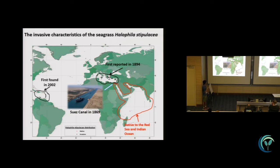Right now it has invaded all the way up to Italy. And surprisingly in 2002, people found the Halophila also in the Caribbean Sea. Just after 10 years, it has spread all the way to all the Caribbean islands.